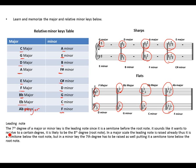The leading note is the seventh degree of a major or minor key. It lies a semitone just before the root and sounds like it wants to resolve to the eighth degree — the root an octave higher. In a major scale, the leading note is already raised, lying a semitone below the root. But in a minor key, the seventh degree must be raised to put it a semitone below the root.